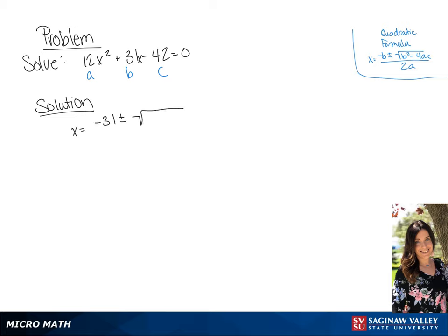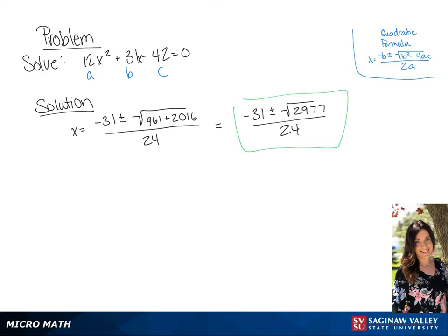So we have x equals negative 31 plus or minus the square root of 961 plus 2016, all over 24. If we simplify this, we're going to get an answer of negative 31 plus or minus the square root of 2,977, all over 24.